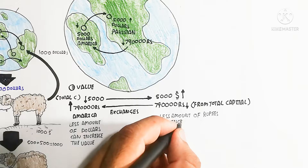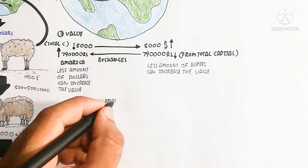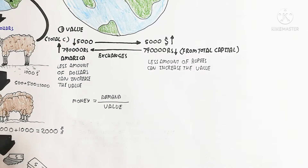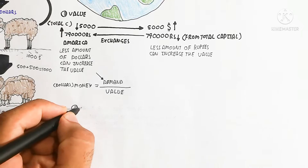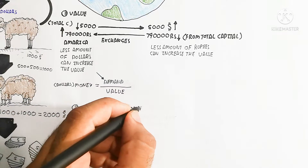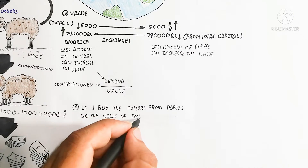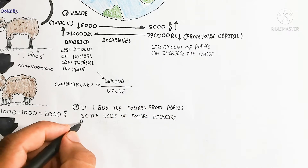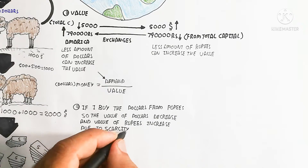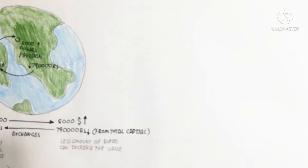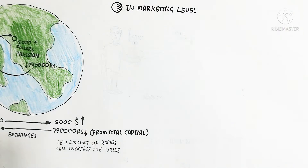Decreasing the number of money in a country can increase the value of that currency. The formula looks like this: money is equal to demand — increase the demand to increase the dollar value. Value and money supply are inversely proportional, but directly proportional to demand. So if I buy dollars with rupees, the value of dollars decreases and the value of rupees increases due to scarcity.